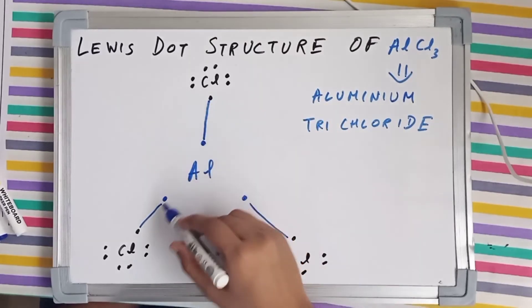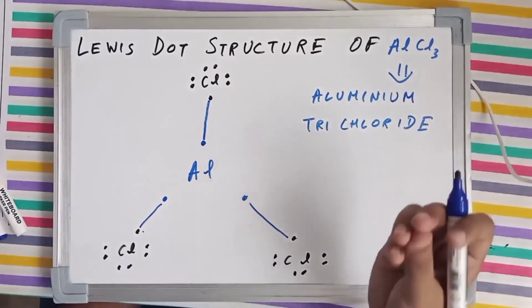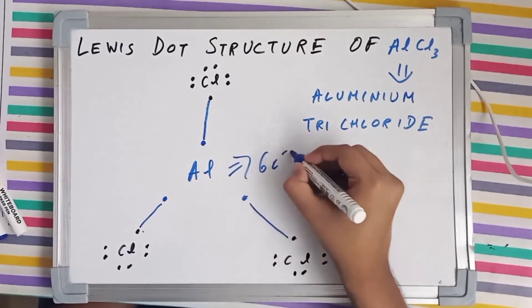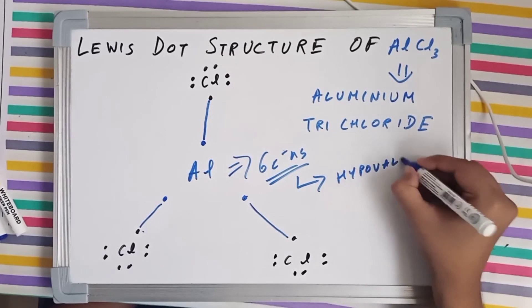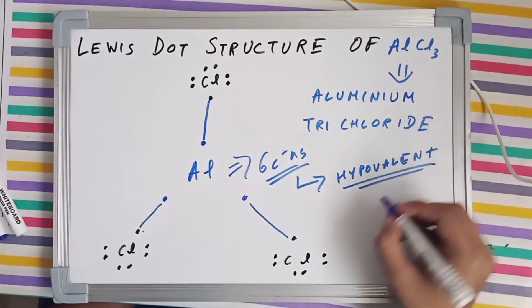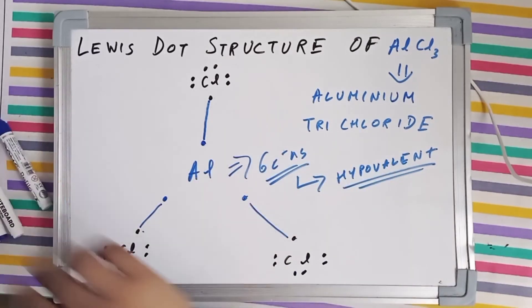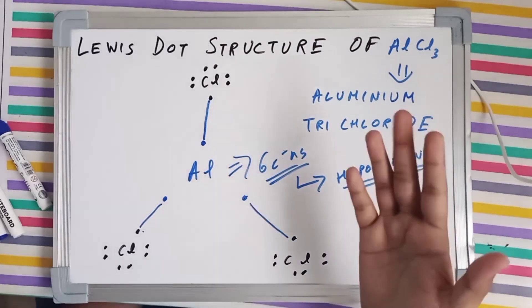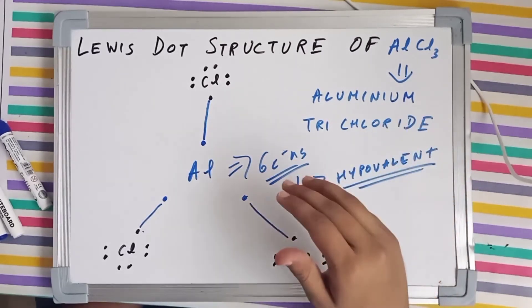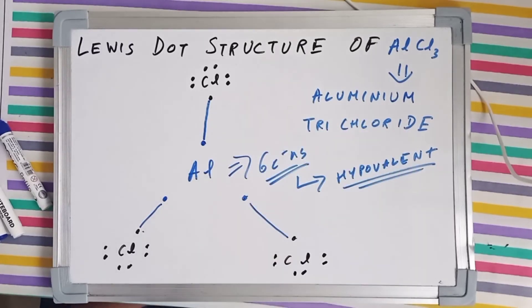If you count the number of electrons around aluminium after bond formation, you get six electrons — it hasn't completed its octet. It has only six electrons in its valence shell, which makes AlCl₃ a hypovalent compound and an exception to the Lewis octet rule. According to the Lewis octet rule, each atom will complete its duplet or octet — aluminium achieves neither. Thank you for watching, I hope you subscribe and I'll see you in the next video.